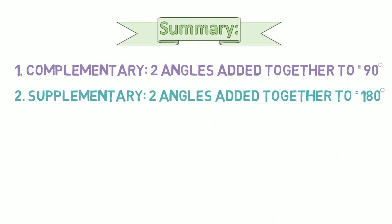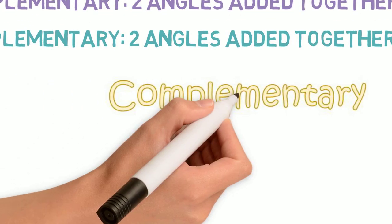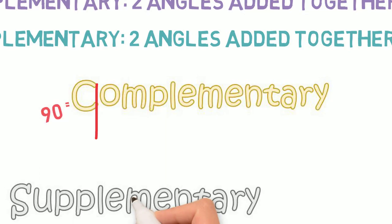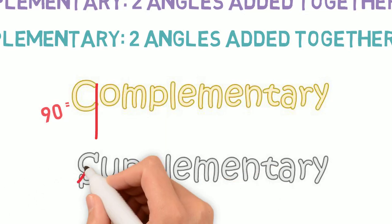And if all else fails, just know that the C in complementary can turn into a 9 for 90 degrees, and the S in supplementary can turn into an 8 for 180 degrees.